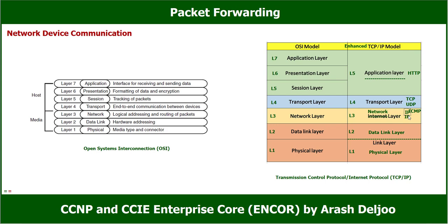After that we have the data link layer. The data link layer provides hardware addressing, framing, and other features. In this video I'm going to talk about this layer a little more. For example, we have multiple protocols like Ethernet, Wi-Fi for wireless communication, Frame Relay, ATM, and other protocols. So in the data link layer we also have multiple protocols.